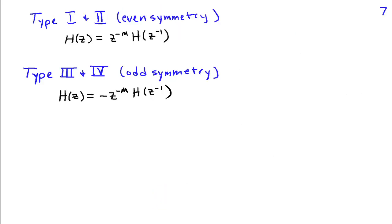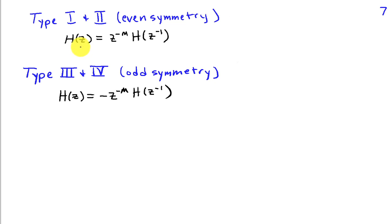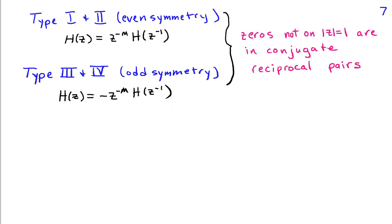Types 1 and 2, which have even symmetry, satisfy H of z equals z to the minus M times H of z inverse in terms of the system function, whereas Types 3 and 4 with odd symmetry satisfy H of z equals negative z to the minus M times H of z inverse. This implies that a zero of H of z must also be a zero of H of z inverse for z not equal to 1, so the zeros of these systems occur in conjugate reciprocal pairs for all zeros not on the unit circle.